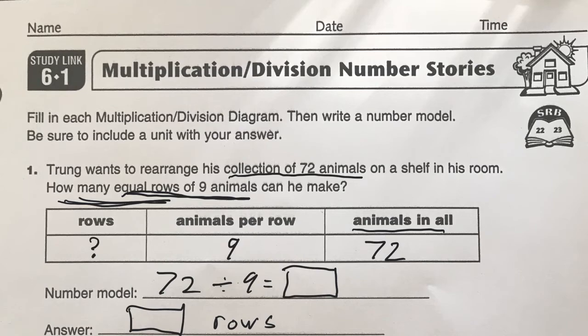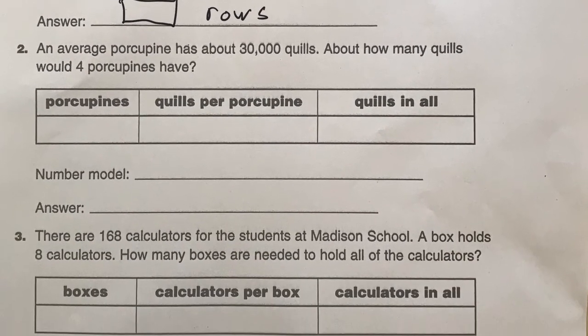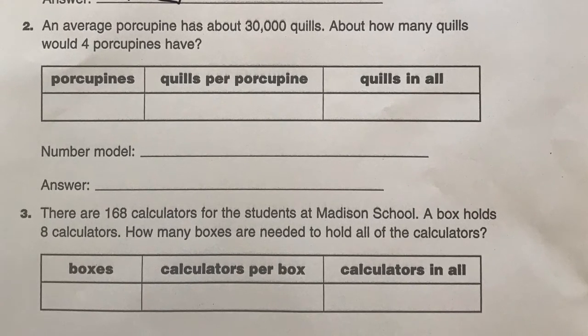The next one, let's see, the average porcupine has about 30,000 quills. Those are the little pointy things in a porcupine. About how many quills would four porcupines have? So four porcupines there. Each porcupine has 30,000 quills.